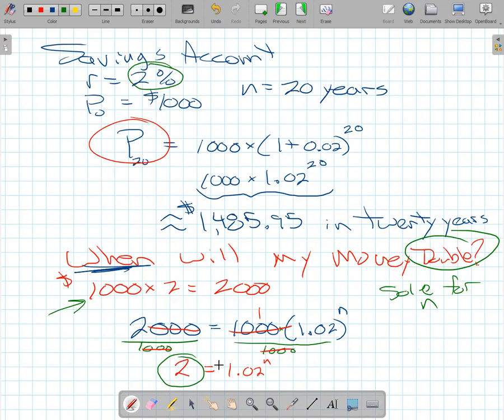So it turns out for a specific interest rate, the doubling time is the same no matter where you start. So it turns out doubling time doesn't depend on the starting amount. It only depends on the rate. Every rate has a special doubling time that goes with it.